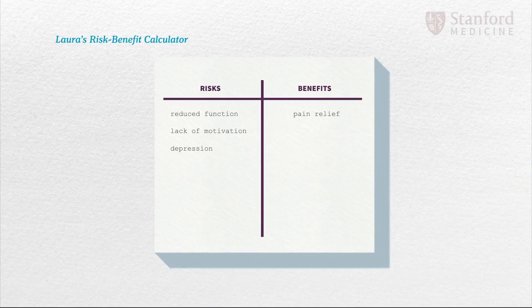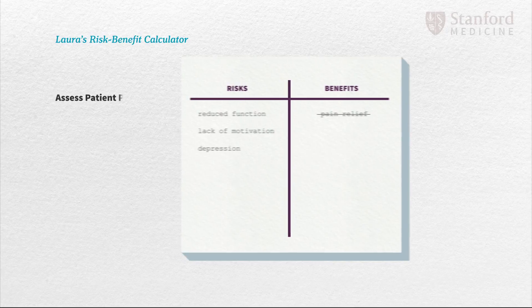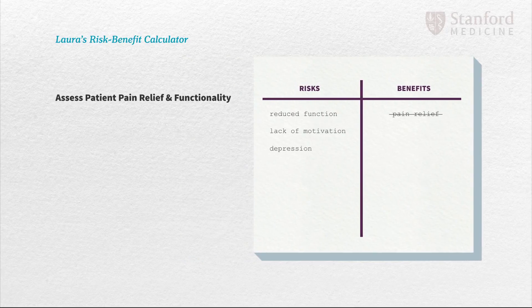In other words, according to our risk-benefit calculator, the adverse effects of chronic opioid therapy had exceeded the medical benefit. Once we've determined that the adverse effects of the opioids for a given patient outweigh the benefits, we discuss our rationale with patients.